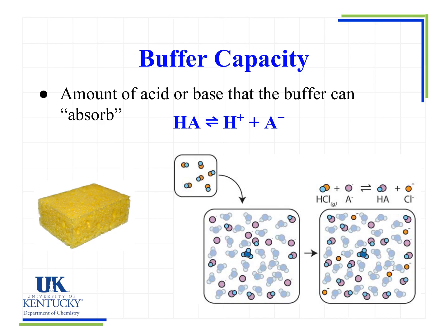Imagine we add some HCl to our buffer. HCl is a strong acid and a strong electrolyte, so it will completely dissociate in water and we'll have H plus ions. We also have those anions floating around from the conjugate base of our buffer. Those H plus ions will connect with the A minus ions and form HA, which is a weak acid, leaving the chloride ions behind. The H plus is not going to reconnect with the Cl minus because that's a strong acid and completely dissociates. So those H plus ions find the conjugate of that weak acid, which connects with them to form HA molecules.